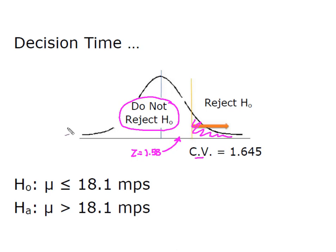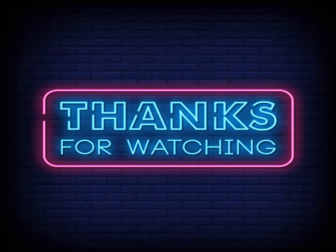So when we draw our conclusion, our decision will be do not reject H0. There is insufficient evidence at this time to conclude that the average speed that a greyhound can run is greater than 18.1 meters per second. As always, I hope that you found this useful, and thanks for watching.